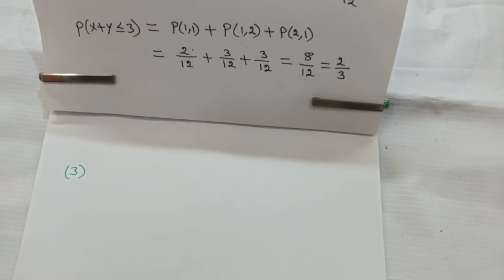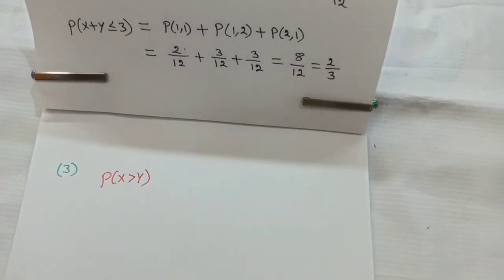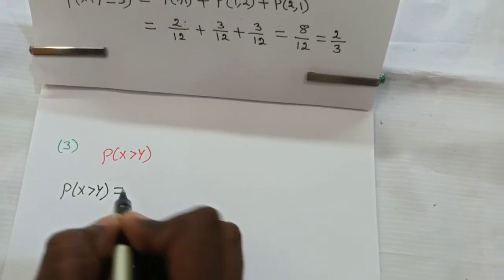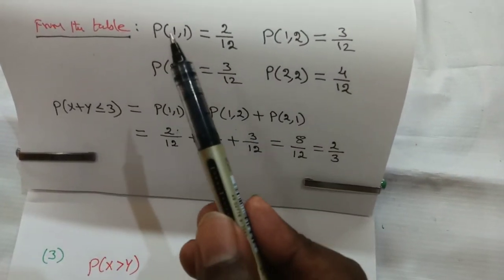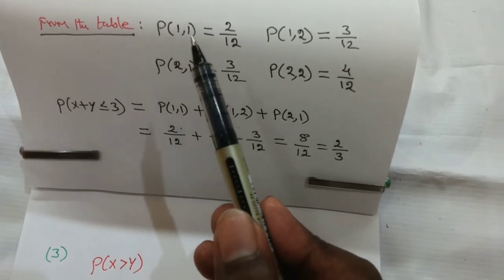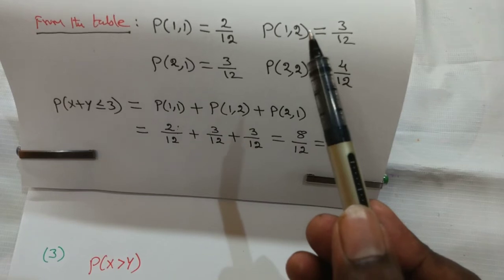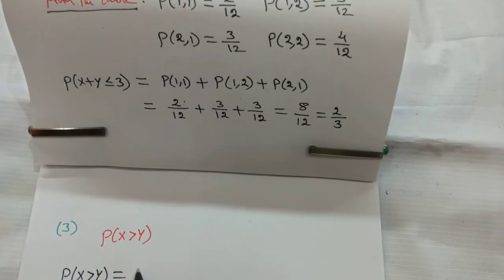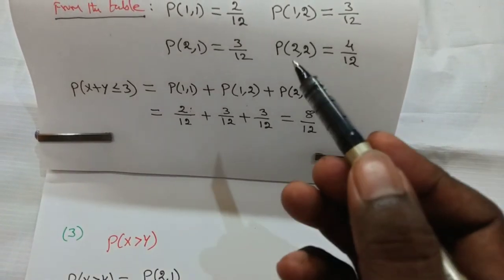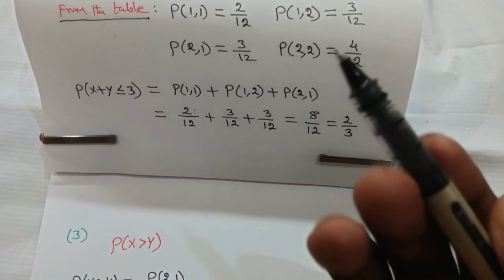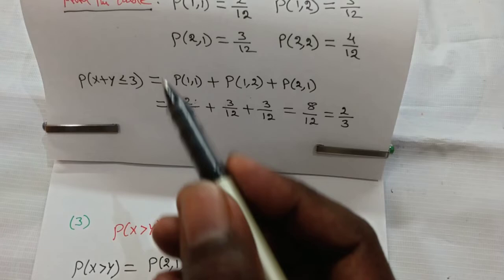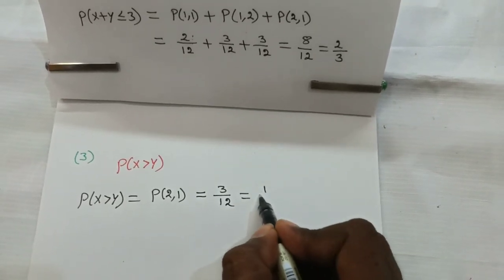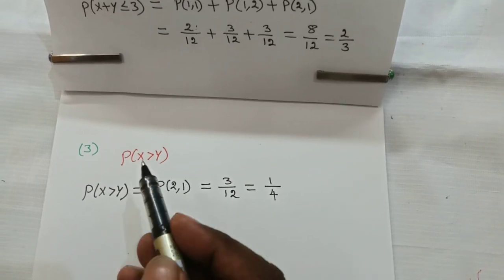For the third question, find p(X > Y). Checking each table entry: x=1, y=1 — x is not greater than y, skip. x=1, y=2 — x is not greater than y, skip. x=2, y=1 — x=2 is greater than y=1, so include p(2,1) = 3/12. x=2, y=2 — 2 is not greater than 2, skip. Therefore p(X > Y) = 3/12 = 1/4.